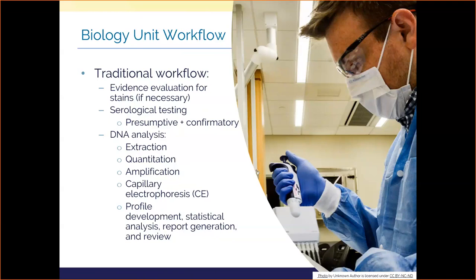From a sample processing standpoint, there are usually two phases to serological, otherwise known as body fluid, testing. A presumptive test helps us rapidly determine what a stain may or may not be, followed by a confirmatory test to ensure that what we're looking at is indeed a body fluid that warrants further analysis. Once we determine it's a human stain relevant to the case, we pull the DNA from the cells, measure how much we're working with, create multiple copies, and statistically analyze it.